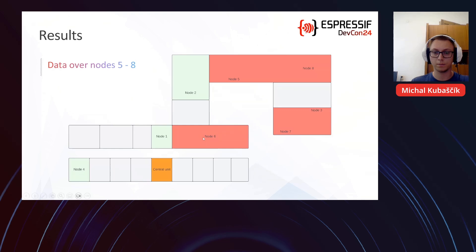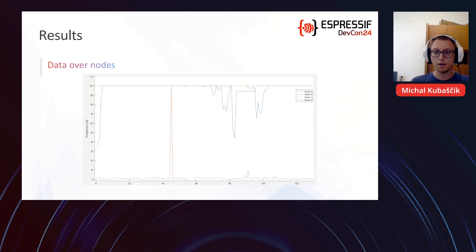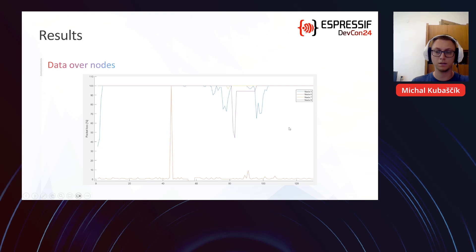In the second comparison, we have nodes 5, 6, 7, and 8 — with nodes 5, 6, and 7 in another corner of the classroom and node 8 elsewhere. On the graph we can see that only node 6 has approximately 0% packet loss, while the others have almost constant 100% or very high packet loss.